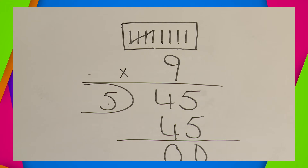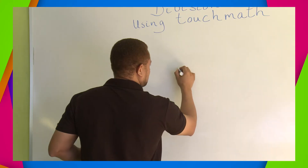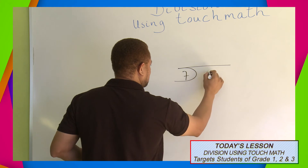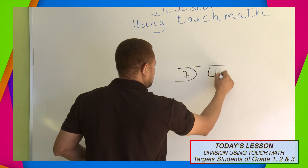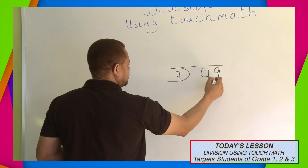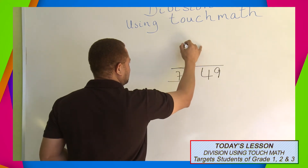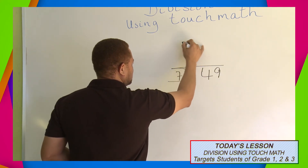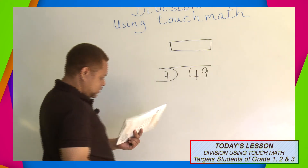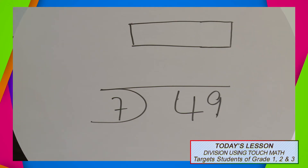Now I'm going to give you one more example. This time, you do it on your own. You are now dividing 49 by 7. I'm going to give you a minute or two to complete this.